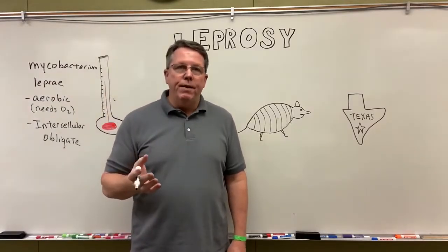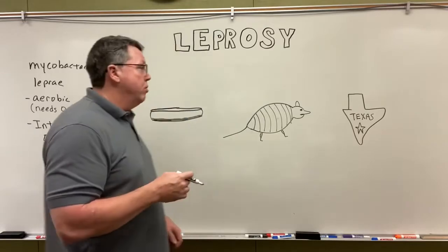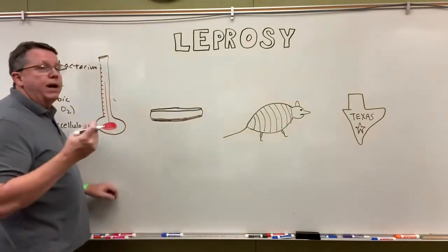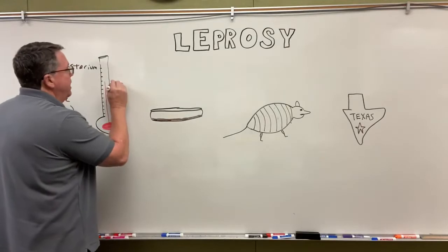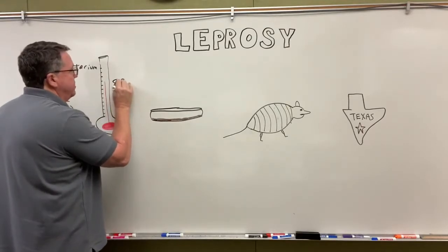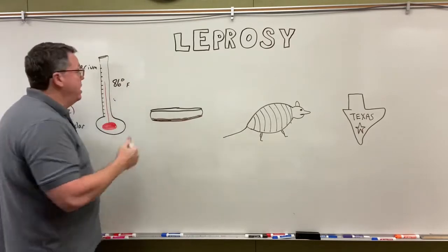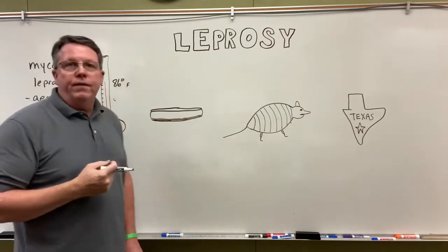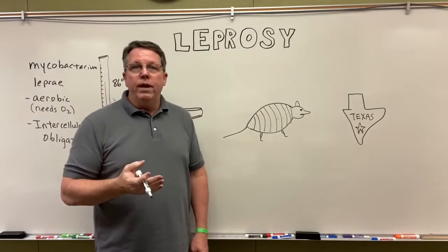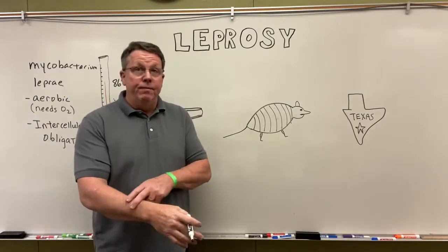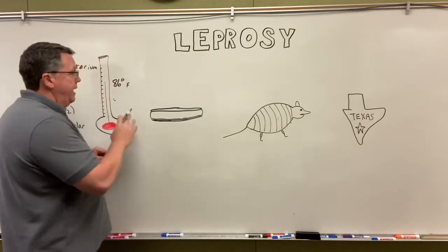Mycobacterium leprae needs cooler temperatures. It likes to be in areas that are about 86 degrees Fahrenheit, or 30 degrees Celsius, give or take about five or six degrees. So it's going to prefer the cooler areas of the body, especially the skin and the nose.